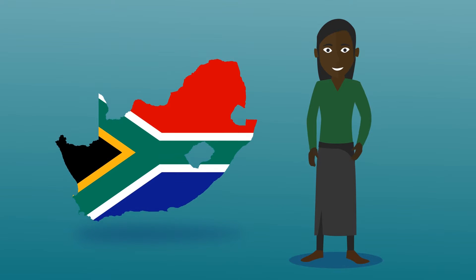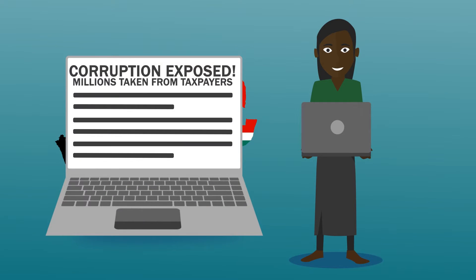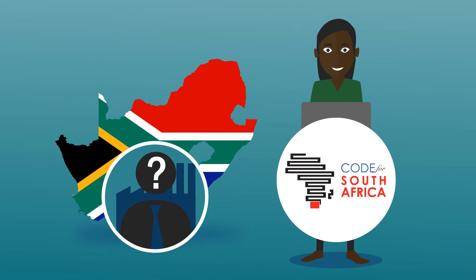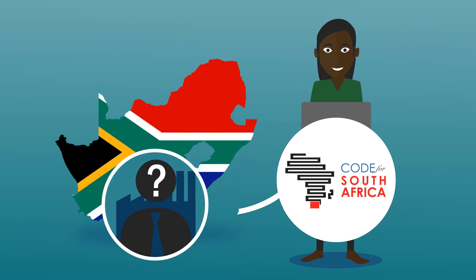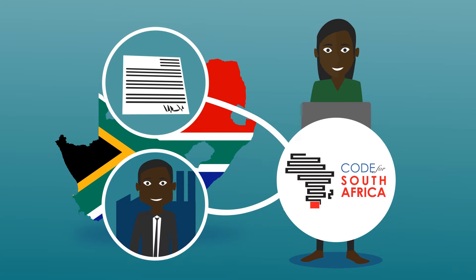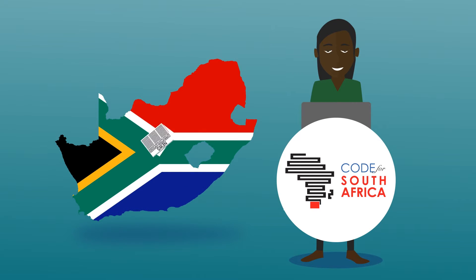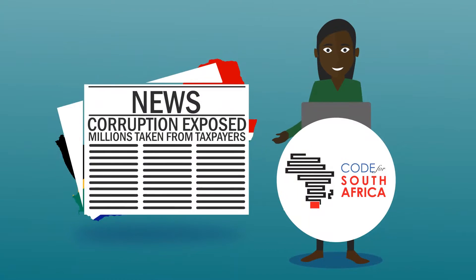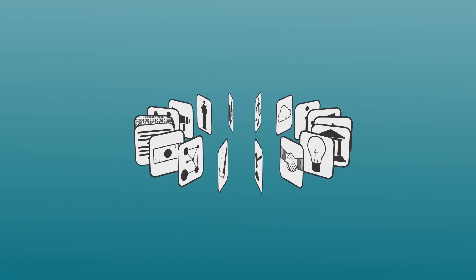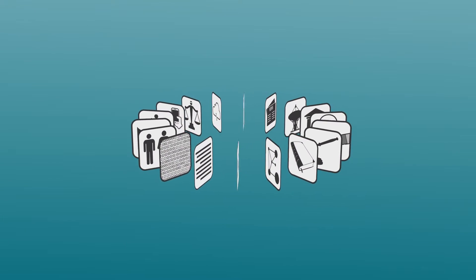And in South Africa, investigative journalist Lin Diwe is writing a story on corporate corruption. Code for South Africa is helping her to discover who really owns the companies and what contracts they have been granted. Using this information, she is able to file her story and expose wrongdoing at the highest level.